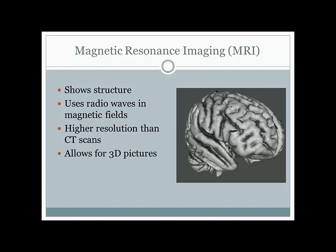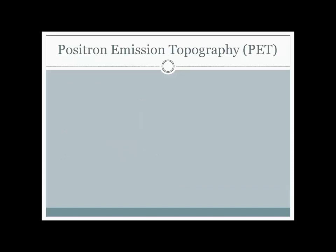One way to do this is with positron emission tomography, or PET scans. The purpose here is not to look at structure per se, but to see the activity levels of different parts of the brain. You're injected with glucose—which is what the brain uses for energy—but this glucose contains a radioactive dye. As the dye works its way up into the brain, you can ask people to do certain tasks: a math test, reading a story, thinking about a particular situation, or even just moving their hand.